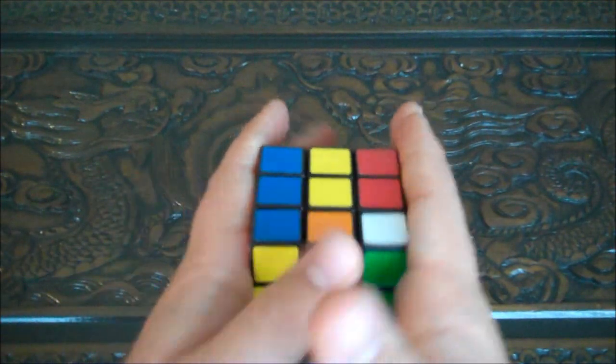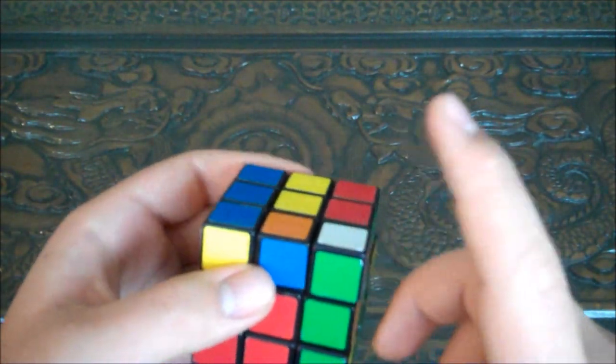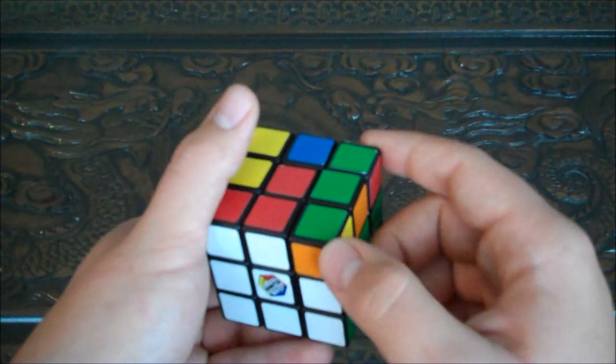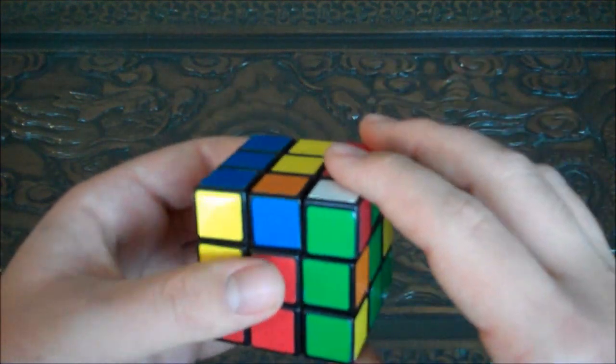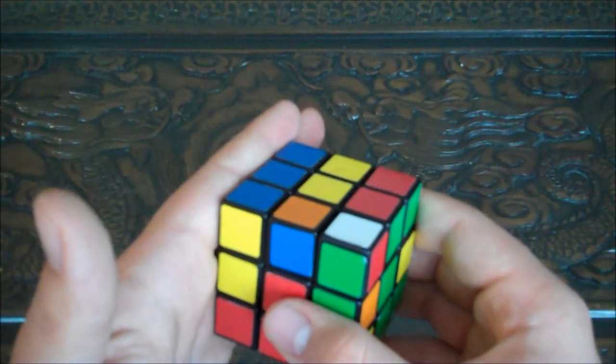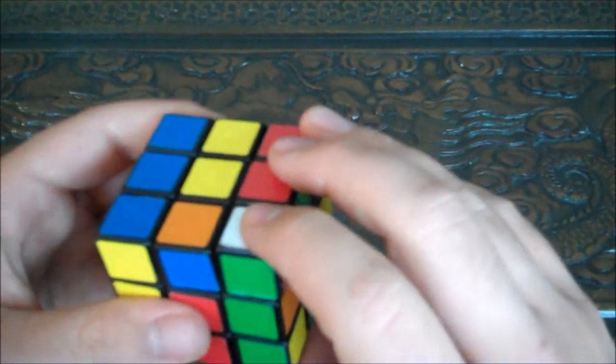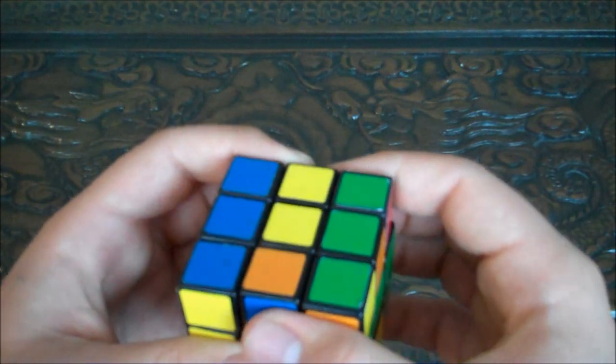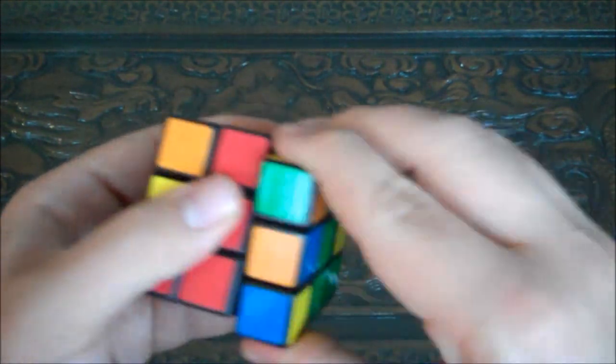So what you're going to do is, this white guy is above where he needs to go, and you're just going to do a simple algorithm to turn them onto the side. You're going to go right up, top counterclockwise, right back down.